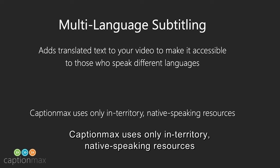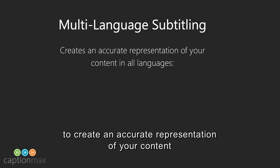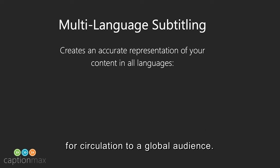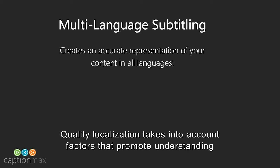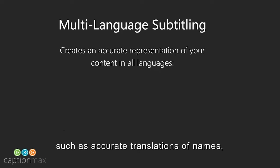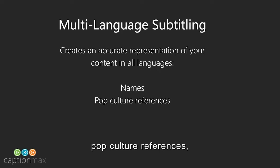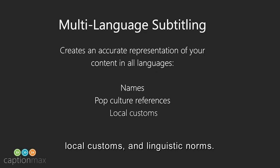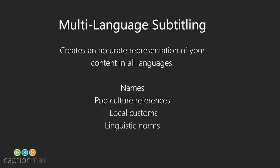CaptionMax uses only in-territory, native-speaking resources to create an accurate representation of your content for circulation to a global audience. Quality localization takes into account factors that promote understanding, such as accurate translations of names, pop culture references, local customs, and linguistic norms.